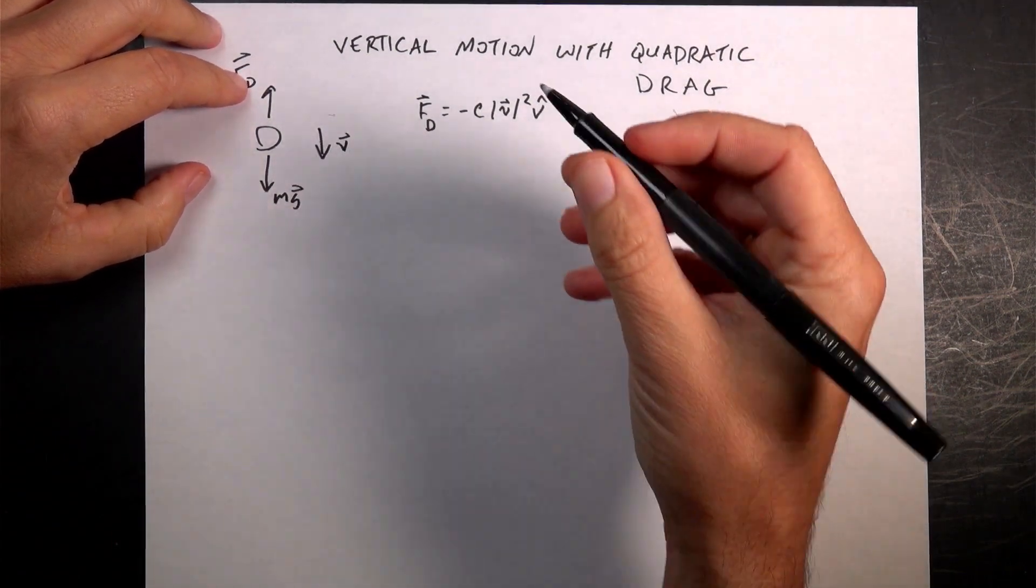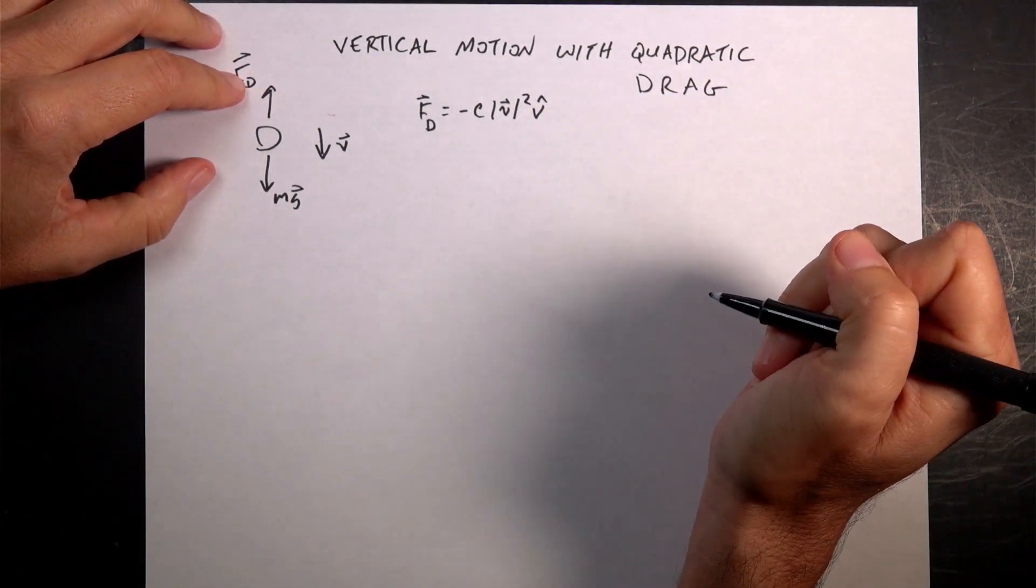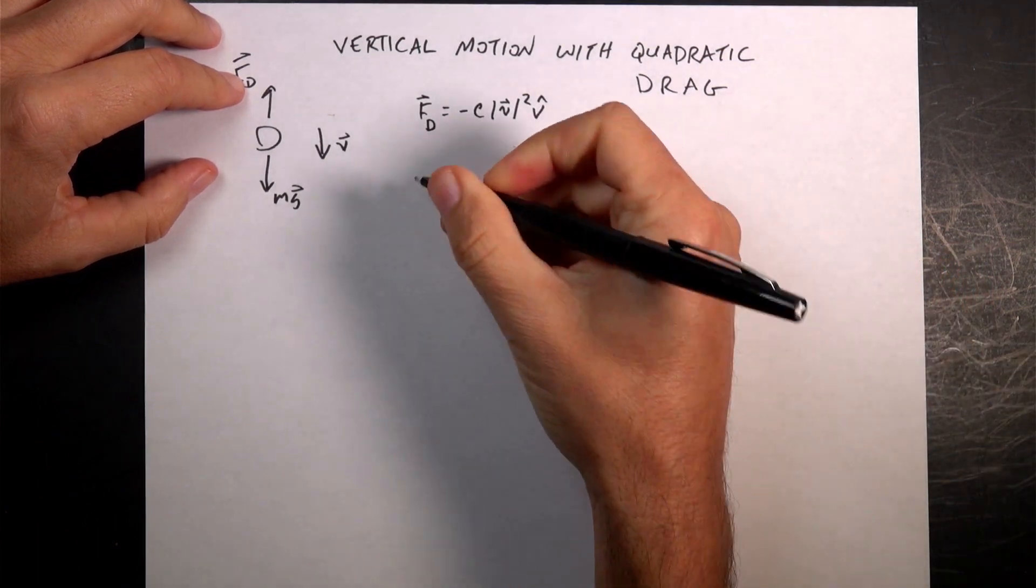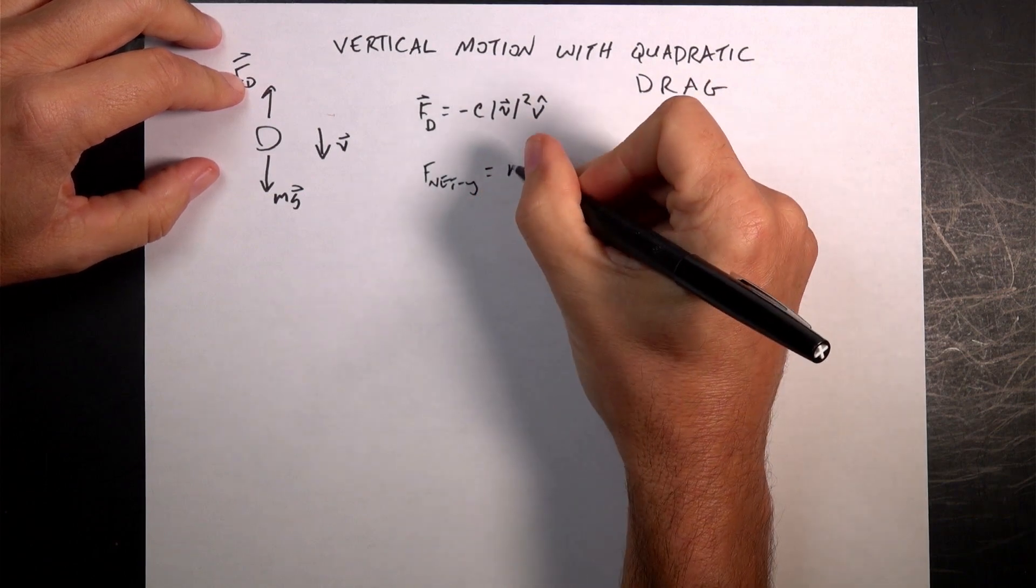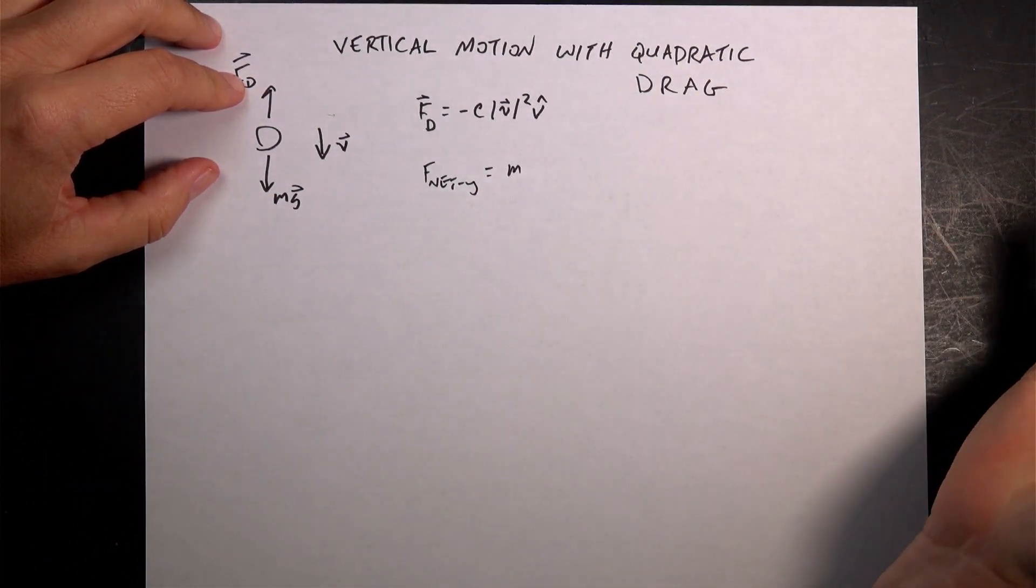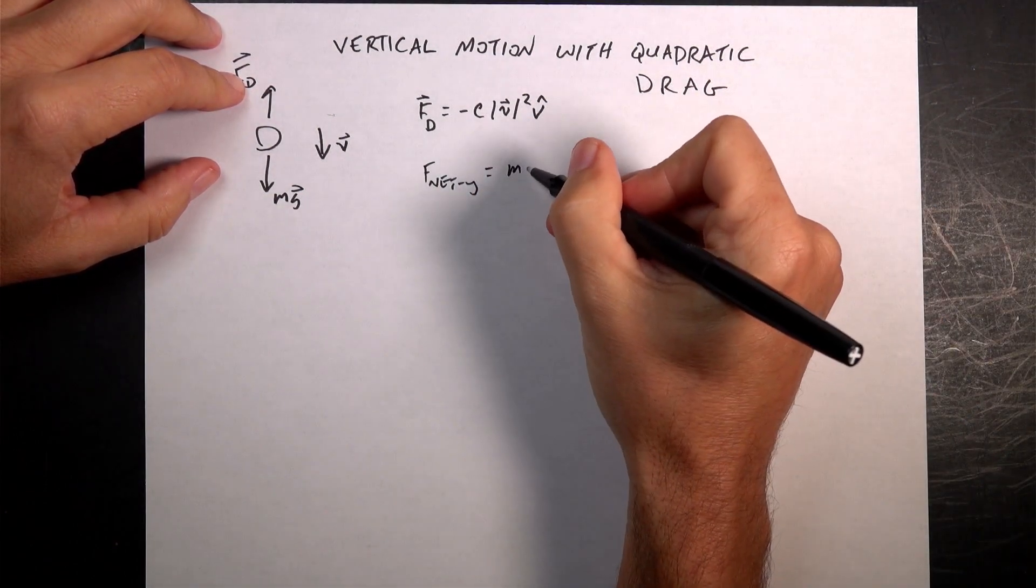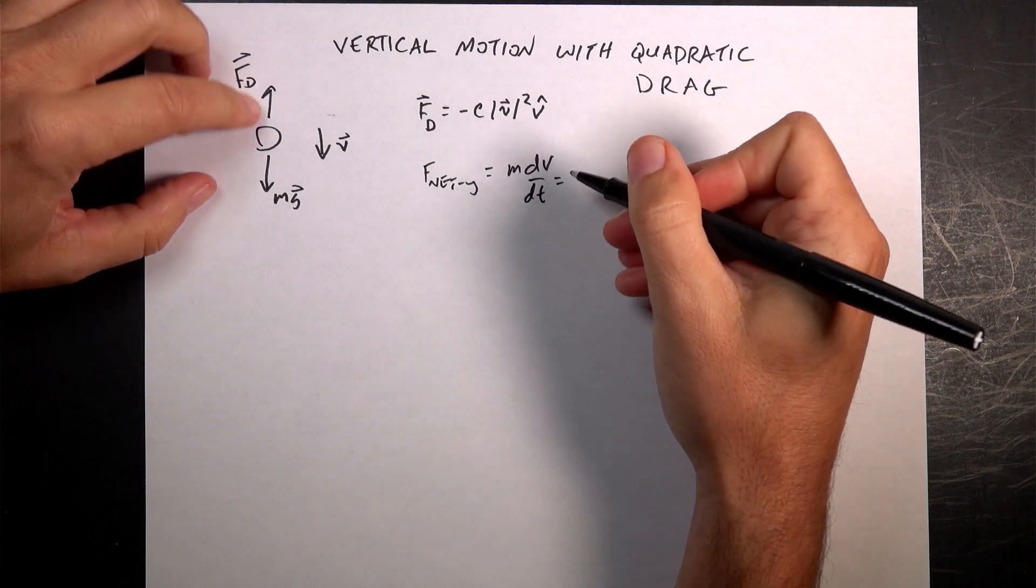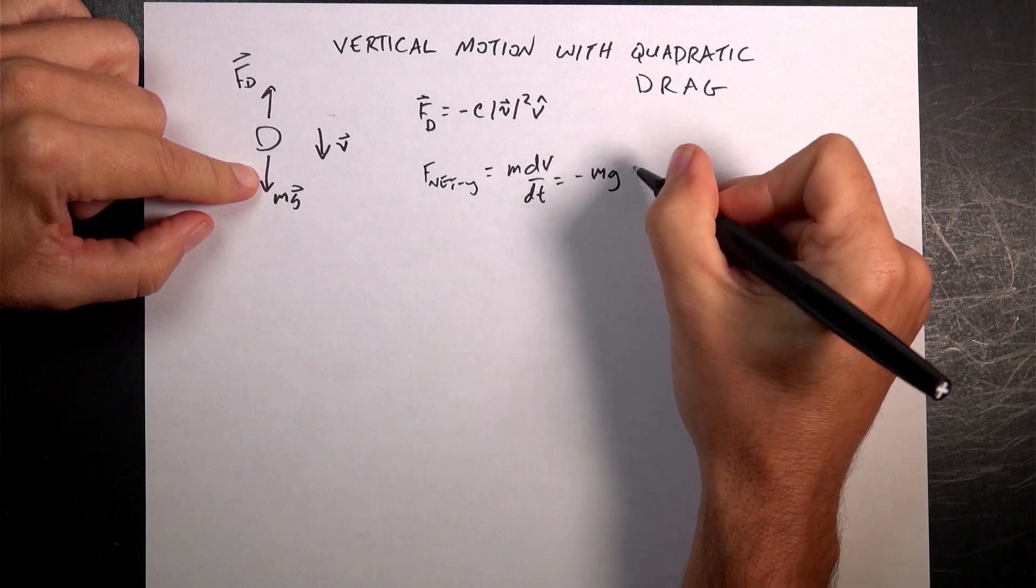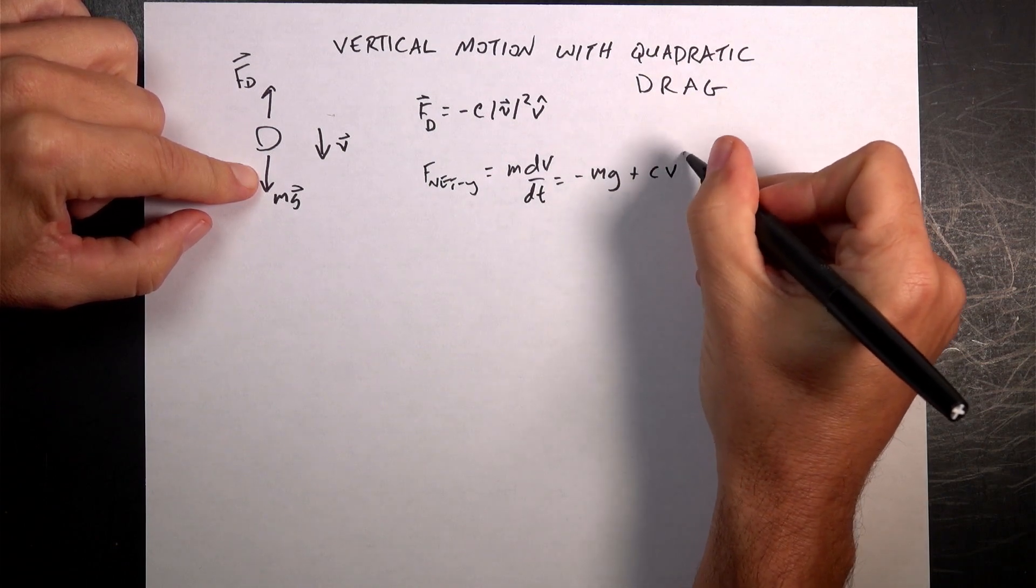So let's just go ahead and write the Newton's second law in the y-direction. So here I have f net y. It's going to be, and I'm going to use this v, even though it's the y velocity. M dv dt, that's the acceleration.